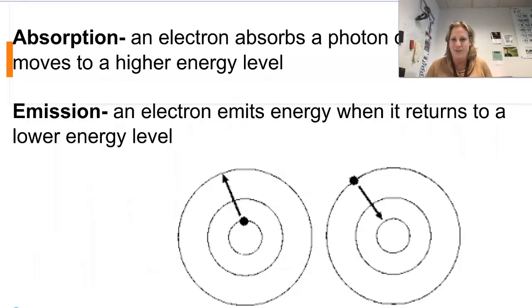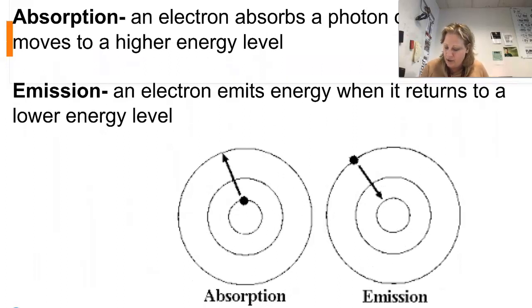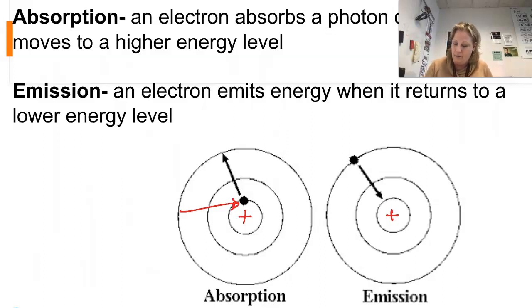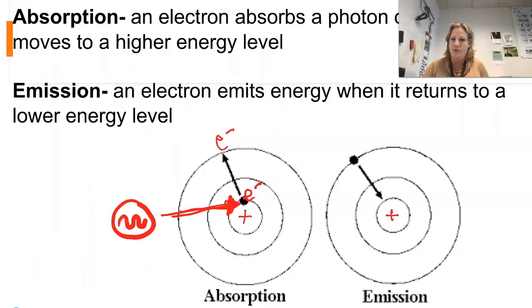Let's go over absorption and emission. An electron close to the positive nucleus is attracted to it. If a photon — a particle of energy corresponding to a certain frequency, say a red photon — comes along, the electron absorbs that photon of energy and moves to a higher energy level. Absorption of the photon causes the electron to move away from the nucleus.